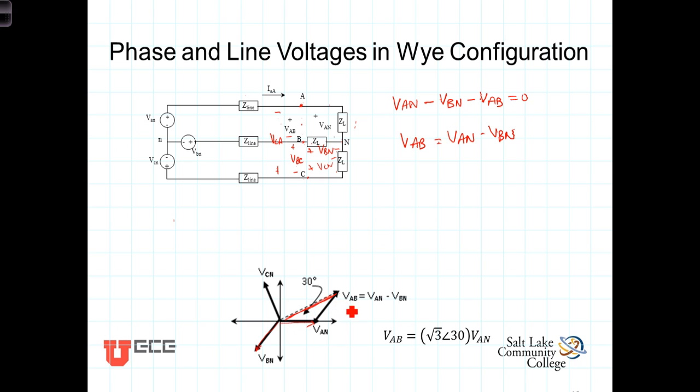that phasor right there, VAB. It's an interesting calculation, not difficult to do, to demonstrate that the length of this phasor is square root of three times the length of VAN.